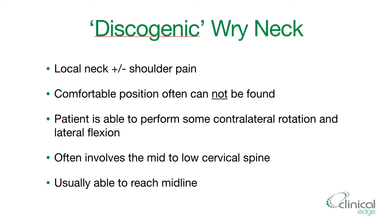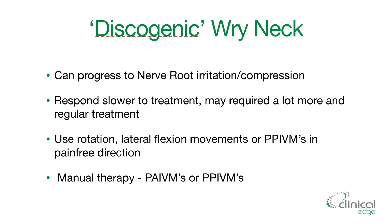What sort of symptoms will someone with discogenic wry neck have? They often have local neck pain plus or minus shoulder pain, and they often can't find a comfortable position. They're able to perform some contralateral rotation and lateral flexion — that is, away from their pain. It often involves the mid to low cervical spine, and they're usually able to reach midline — some fairly different features to your acute wry neck.